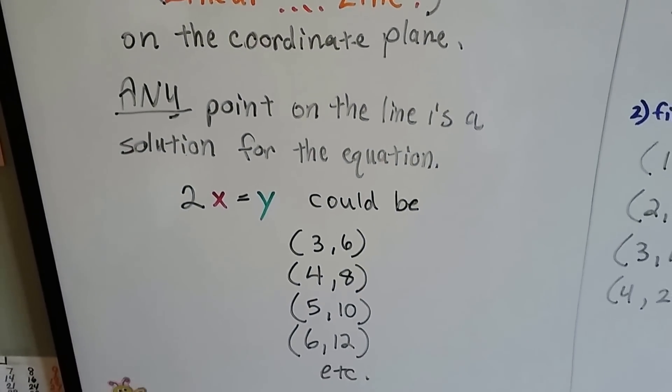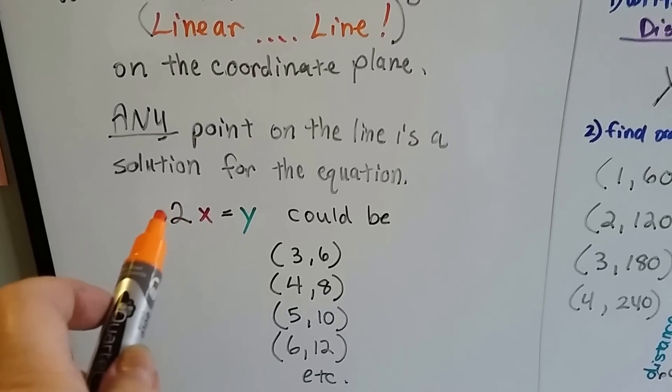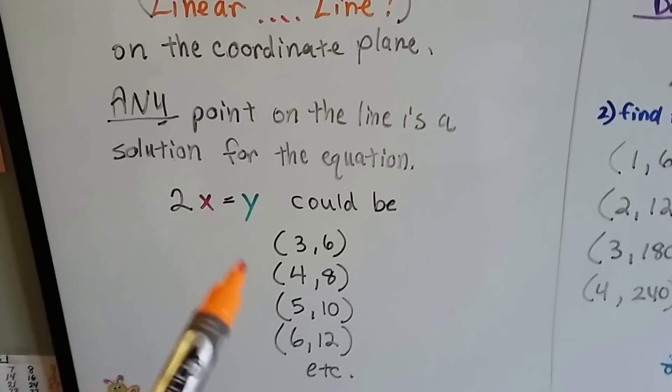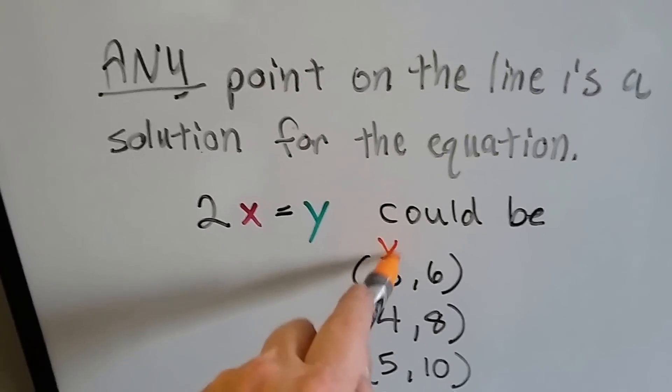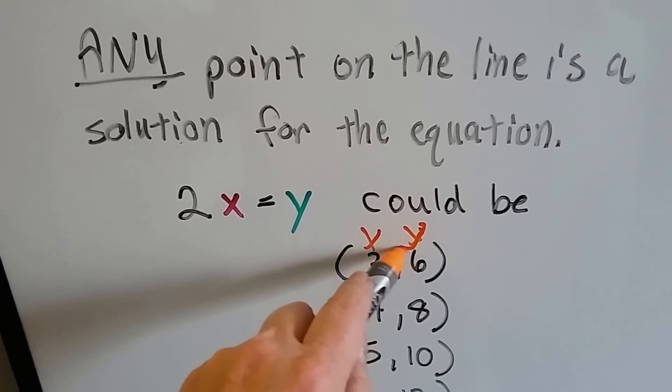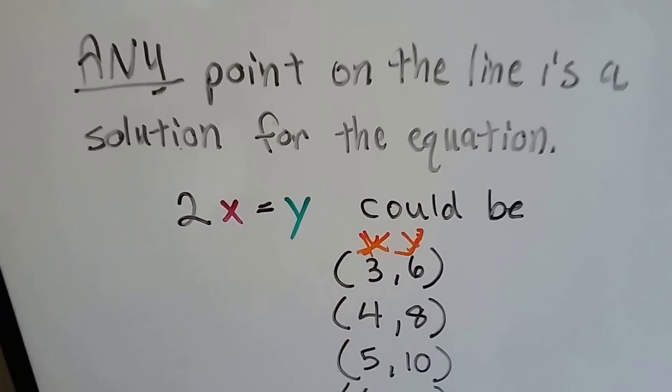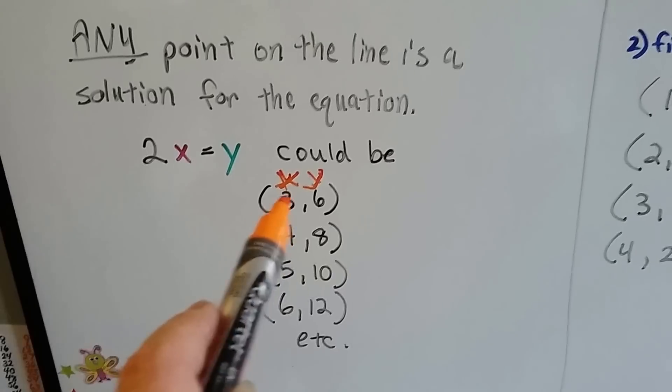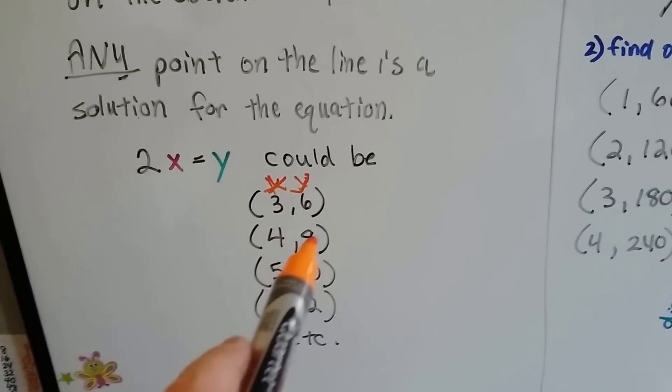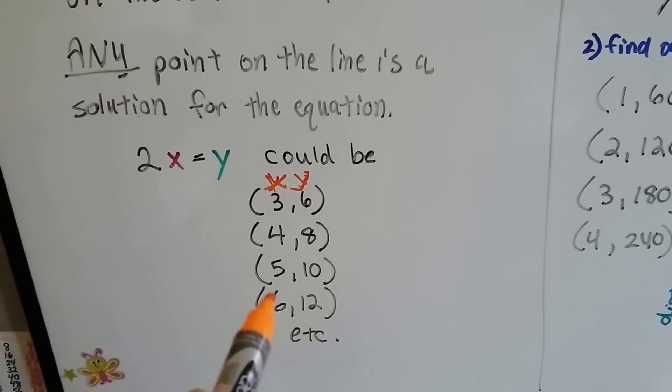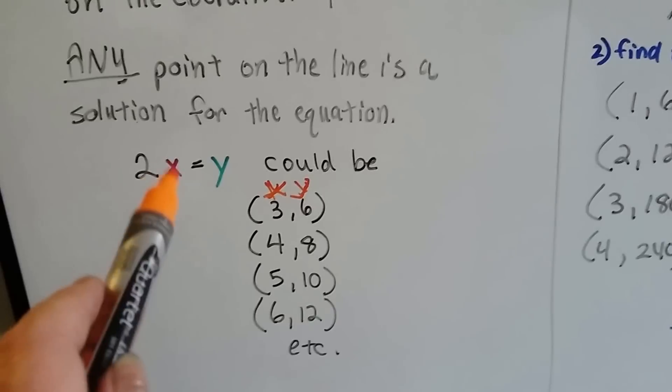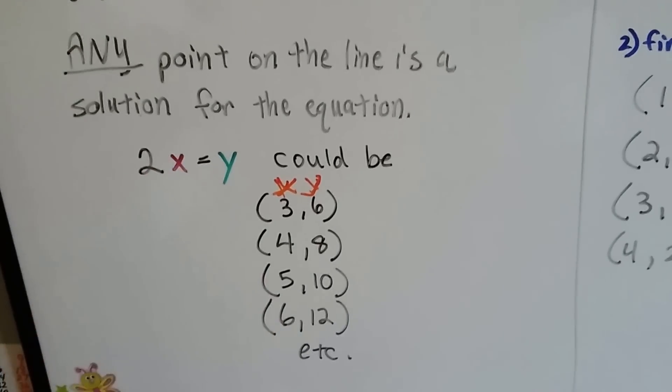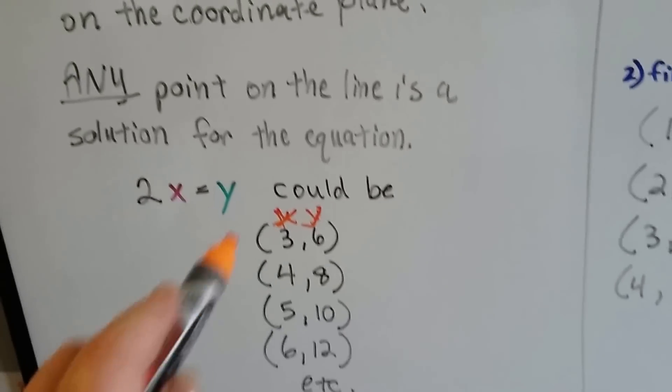Any point on the line is a solution for the equation. For 2x equals y, it could be, x could be... see these are the x, and these are the y, right here. This is x. So x could be 3, so 2 times 3 is 6, 2 times 4 is 8, 2 times 5 is 10, 2 times 6 is 12. So all of these are solutions for this linear equation. And it will keep on going.